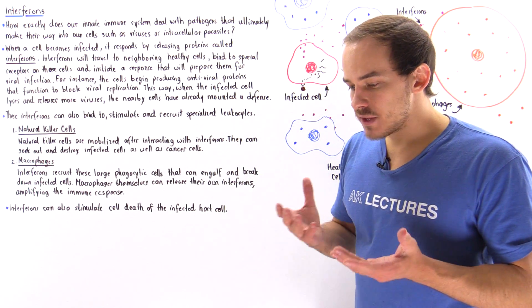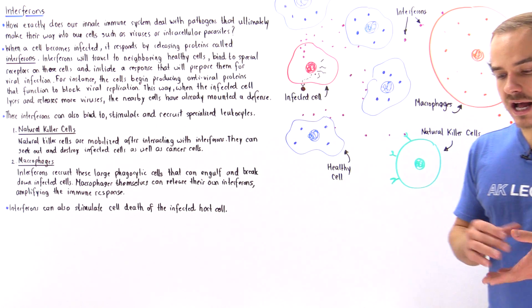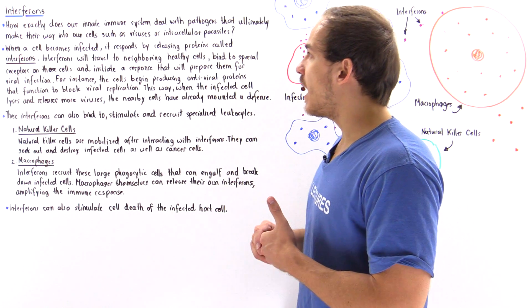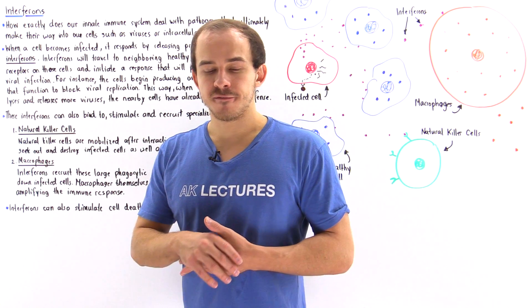One important aspect of the innate immune system that I forgot to mention previously are a group of biological molecules known as interferon.